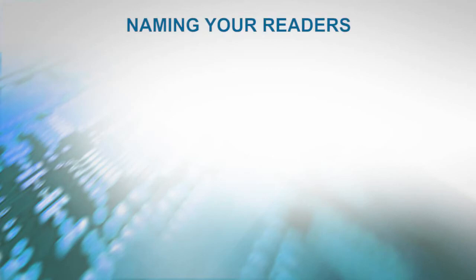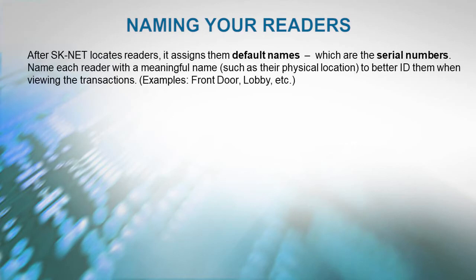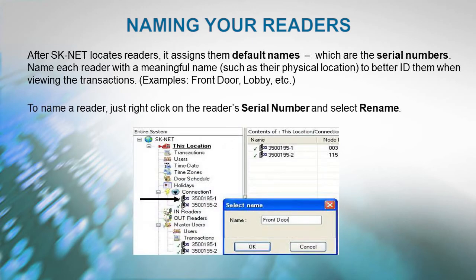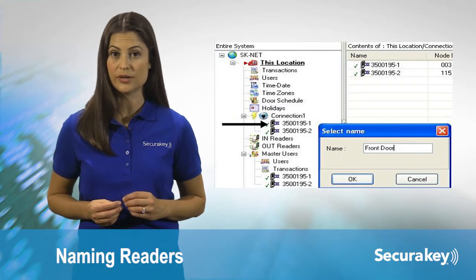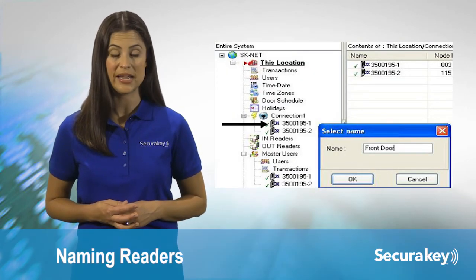Naming your readers: After SKNet initially locates the readers, it assigns the default name to the readers, which is the serial number. It is recommended that the system operator name each reader with a meaningful name, such as their physical location, to better identify them when viewing the transactions — for example, front door, lobby, etc. Just right-click on the reader's serial number and select Rename.